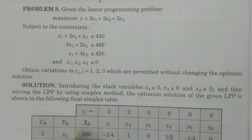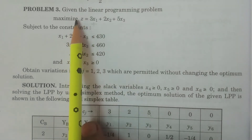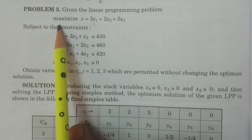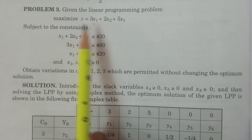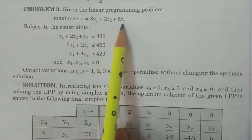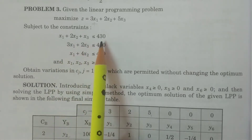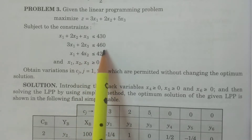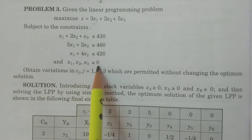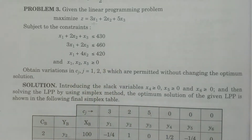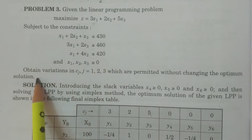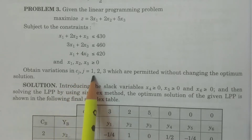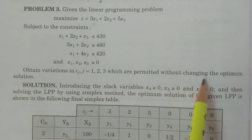See the problem; you can easily understand. The linear programming problem given to us is: maximize z = 3x1 + 2x2 + 5x3, subject to the constraints: x1 + 2x2 + x3 ≤ 430; 3x1 + 2x3 ≤ 460; x1 + 4x2 ≤ 420; and x1, x2, x3 ≥ 0. Now obtain variations in Cj, j = 1 to 3, which are permitted without changing the optimum solution.